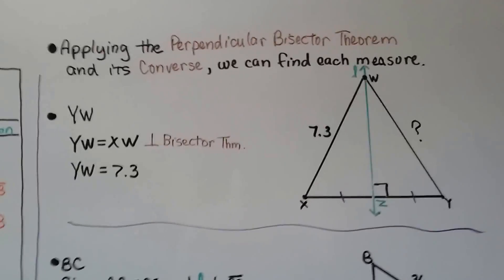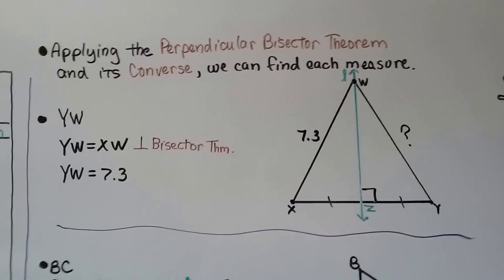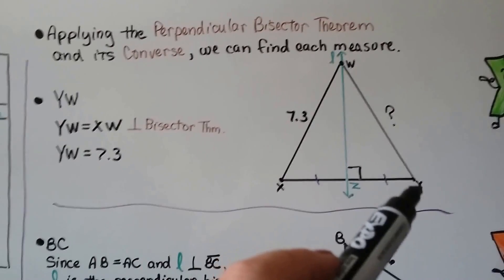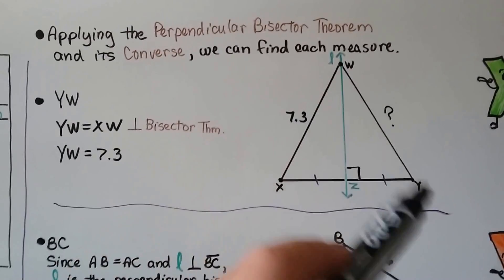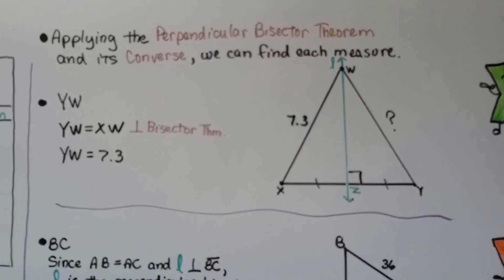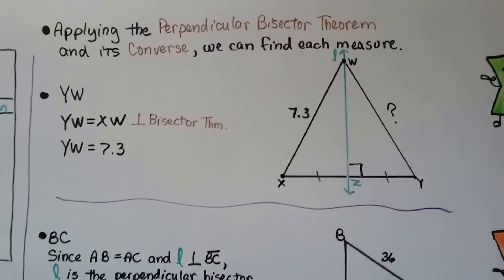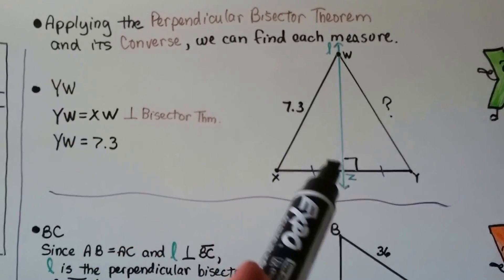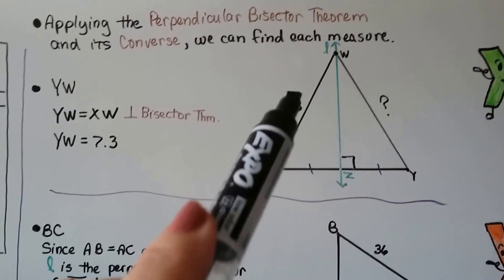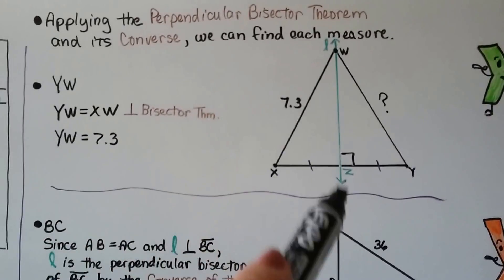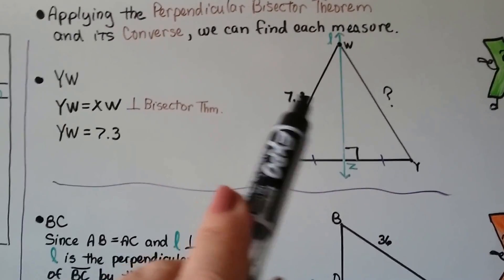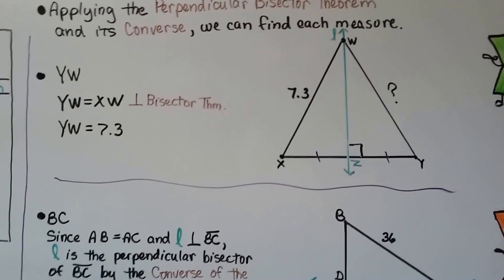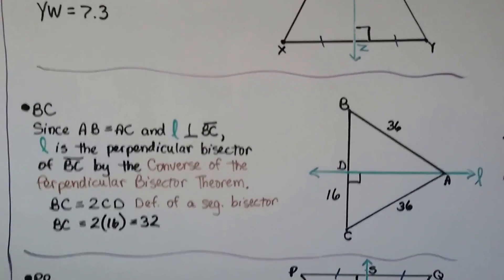Applying the perpendicular bisector theorem and its converse, we can find each measure. To find YW, we see that XW is 7.3. So YW equals XW because of the perpendicular bisector theorem — we've got a side, an angle, and a side. That's bisecting it, and they're congruent parts of congruent triangles, so if XW is 7.3, then YW must also be 7.3.